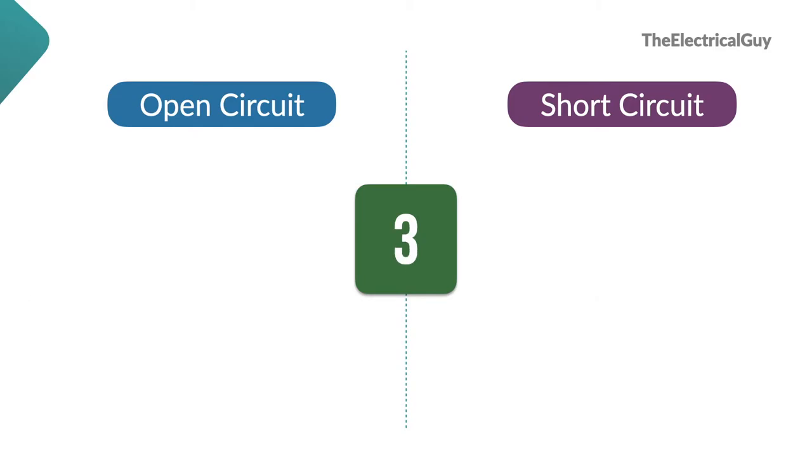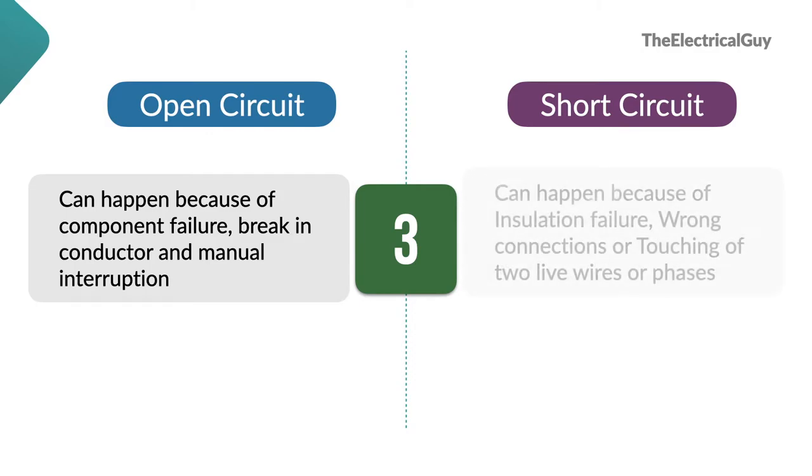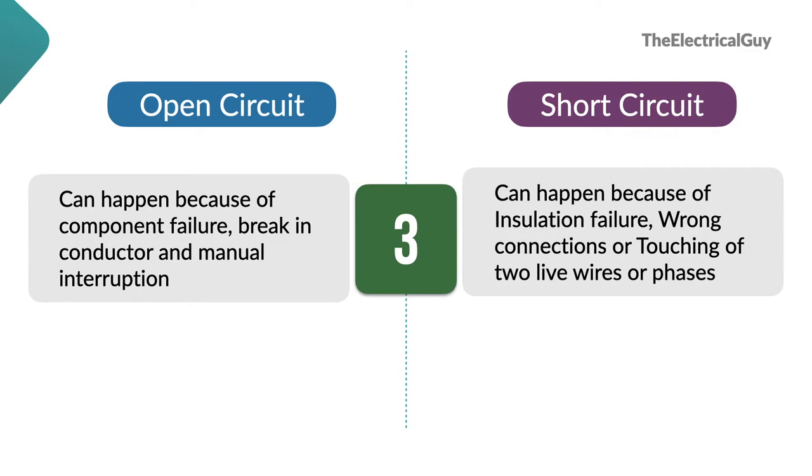Open circuit can happen because of multiple reasons, which includes component failure, break-in conductor and manual interruption. If you know some of the examples of manual interruption, let me know via comments. Short circuit can happen because of insulation failure, wrong connections or touching of the two live wires or phases.